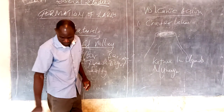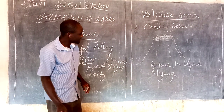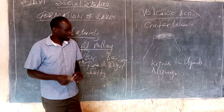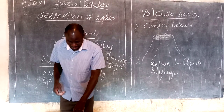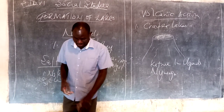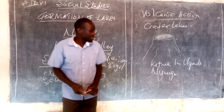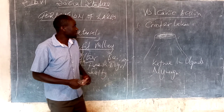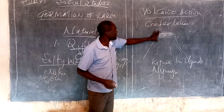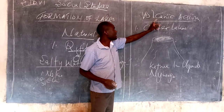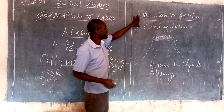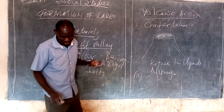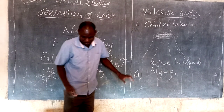In Kenya we have Paradise Lake and Lake Chala. These are examples of volcanic crater lakes — they are formed through volcanic action and are formed naturally.